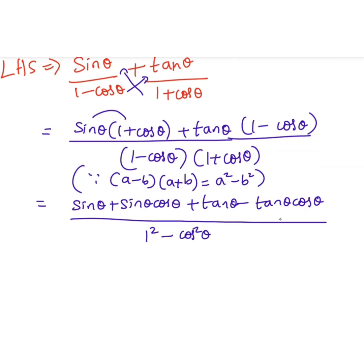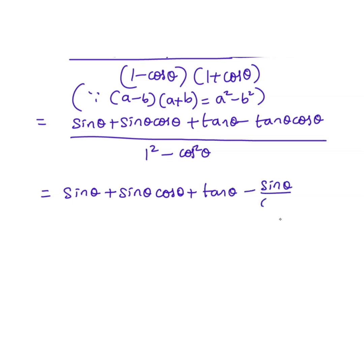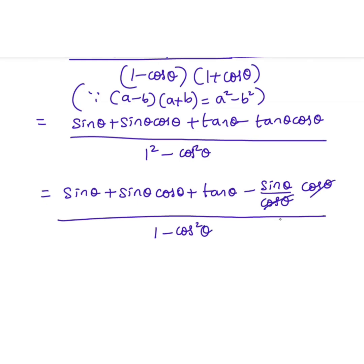Taking the numerator as is, we get sin θ plus sin θ cos θ plus tan θ. Then minus tan θ cos θ can be written as minus (sin θ / cos θ) into cos θ, so the cos terms cancel and the sin and minus sin cancel, simplifying the numerator.